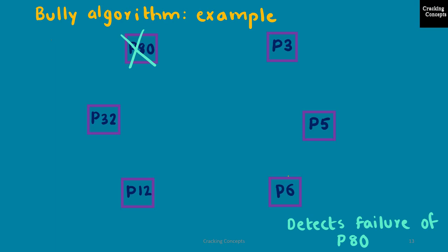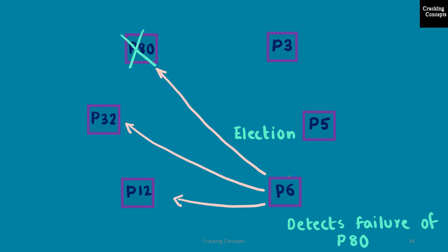Now let us look into an example of the Bully algorithm. We take the case of six processes with the same process IDs as before, and assume the process with the highest ID — P80 — has failed. P6 has detected the failure of P80, so it initiates an election by sending election messages to all processes with a higher ID than itself: P12, P32, and P80. It then expects an answer message (OK message) from each of those processes.